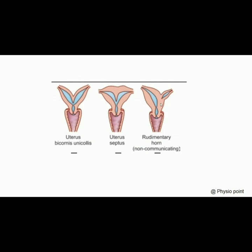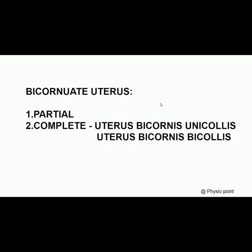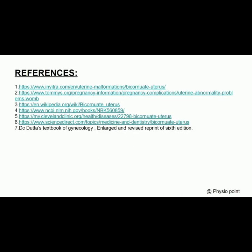So we saw about bicornuate uterus. It is of two types: partial or complete. If it is complete, it may be uterus bicornis bicollis or uterus bicornis unicollis. Thank you so much for watching.